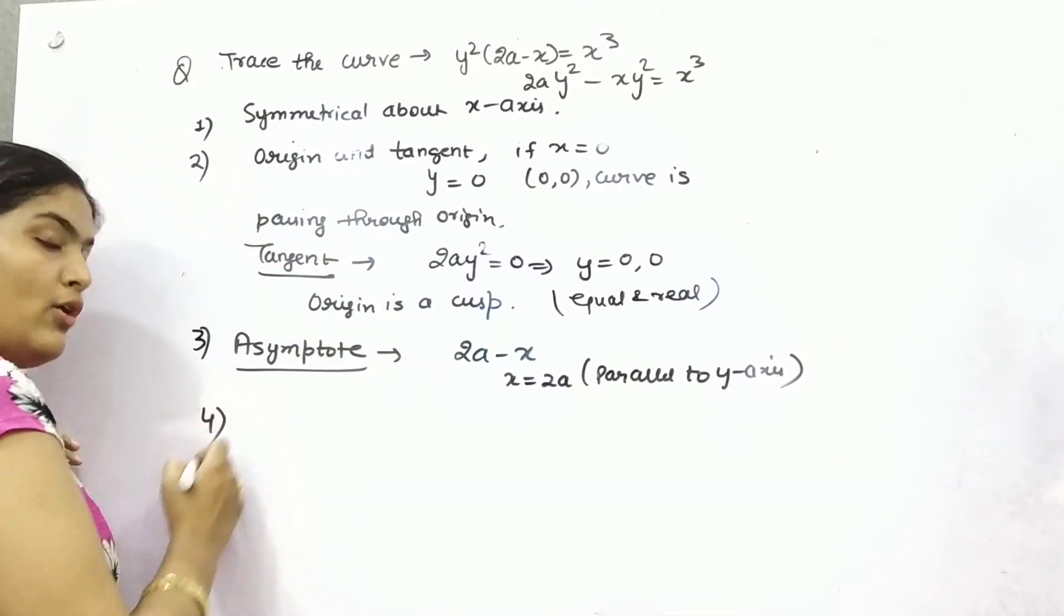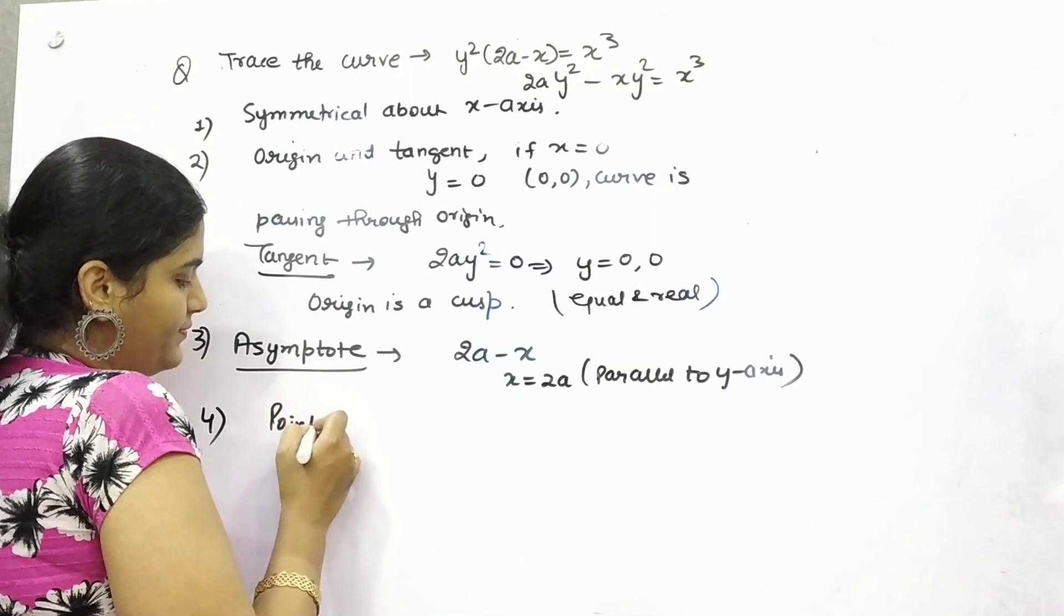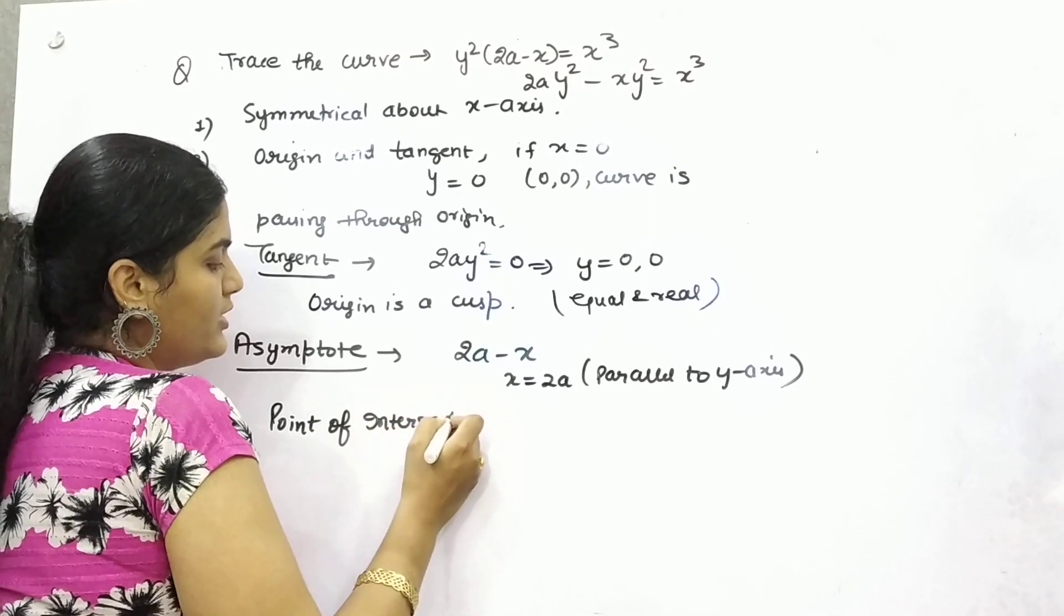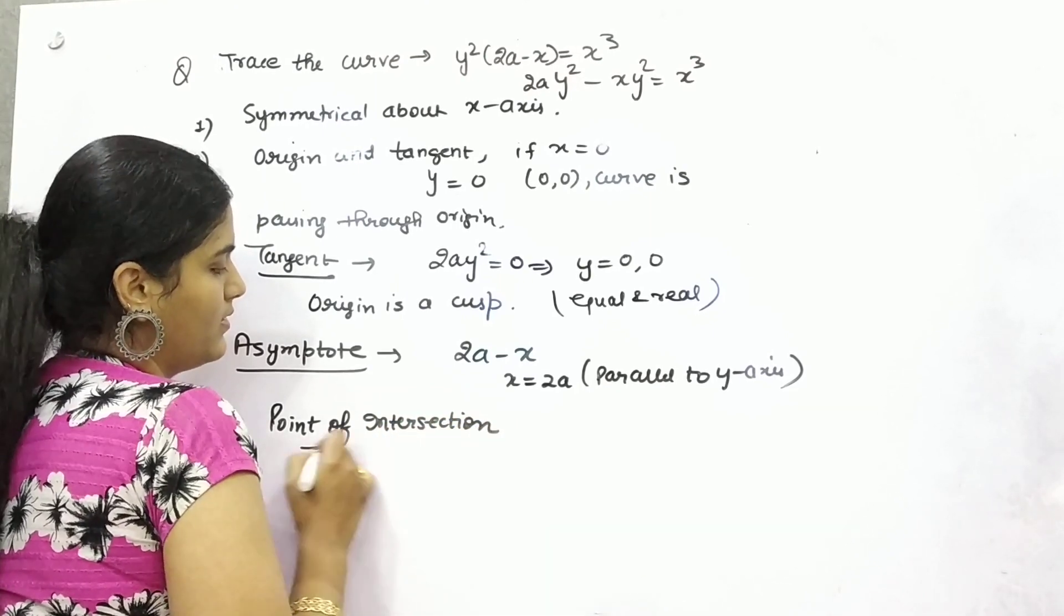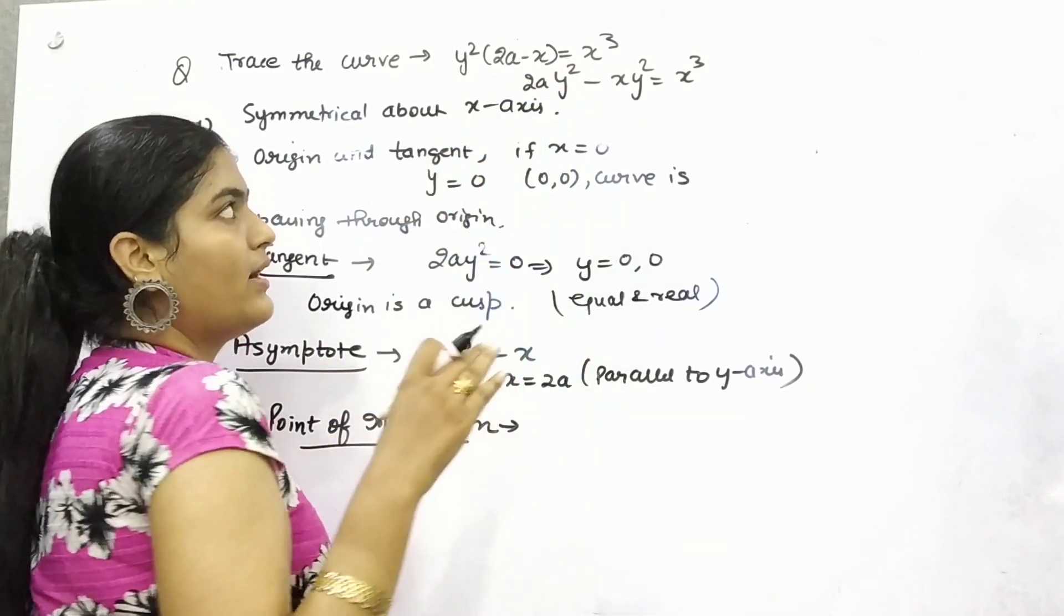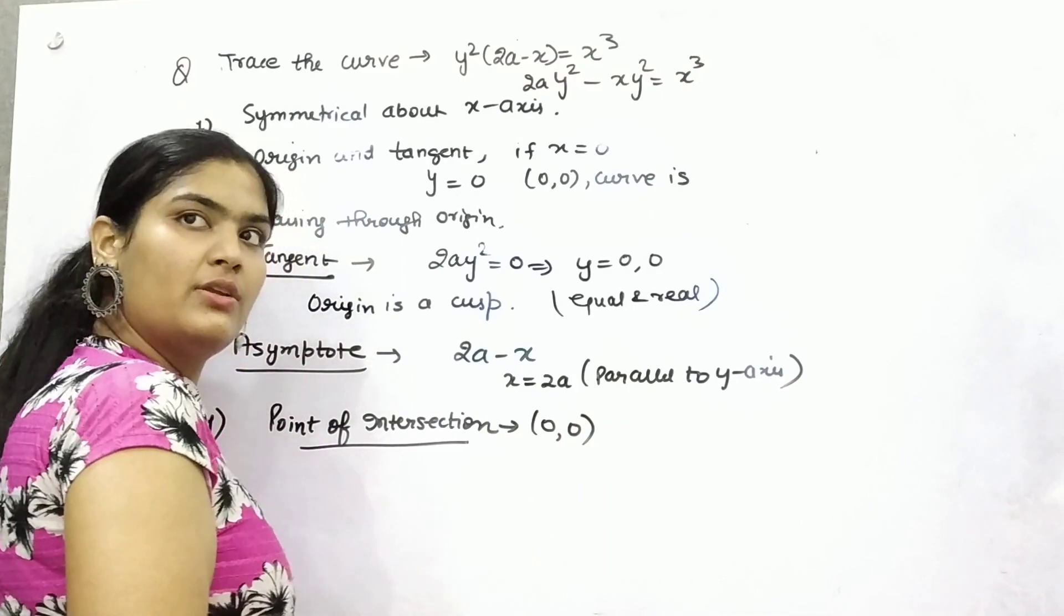So now, fourth point - what is your fourth point? Point of intersection. So for point of intersection, first of all, you can see that on putting y as 0, x is 0. So (0,0) is your point of intersection, firstly.